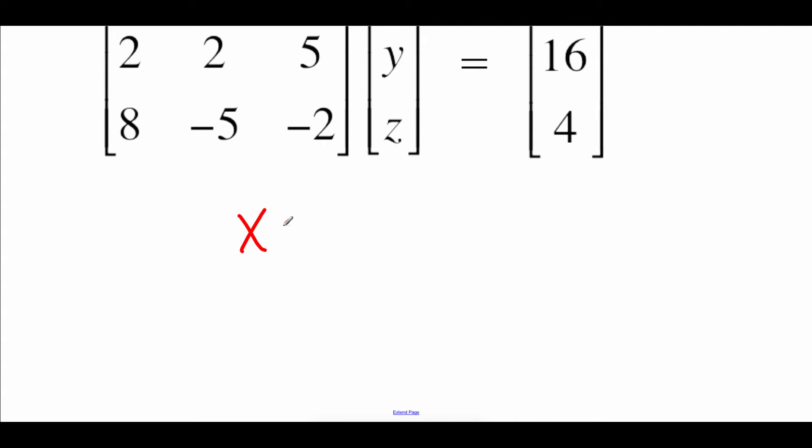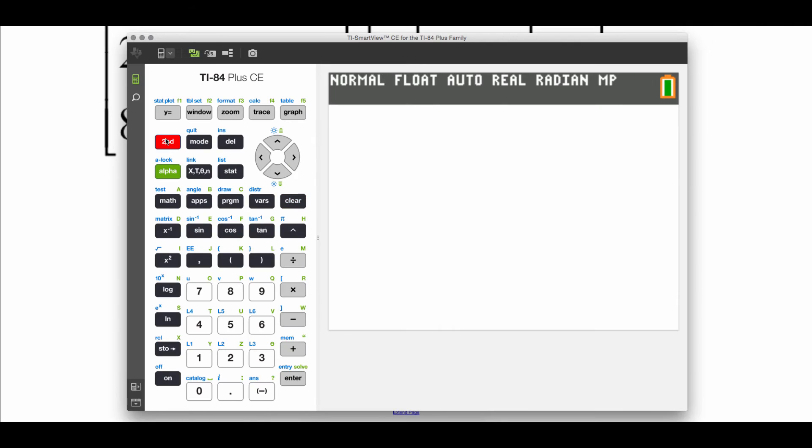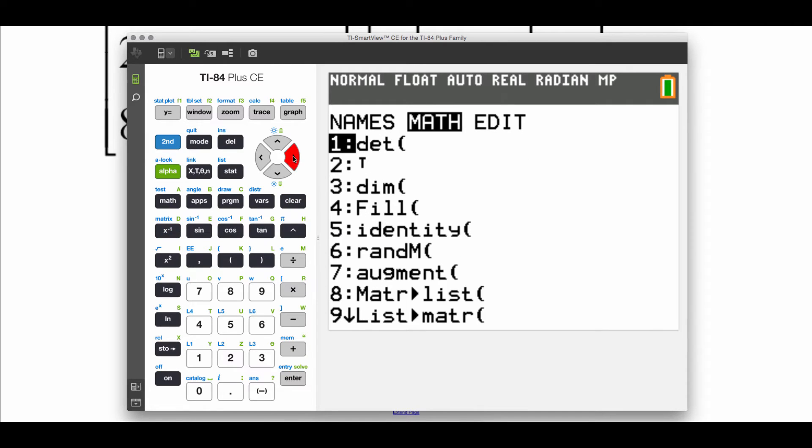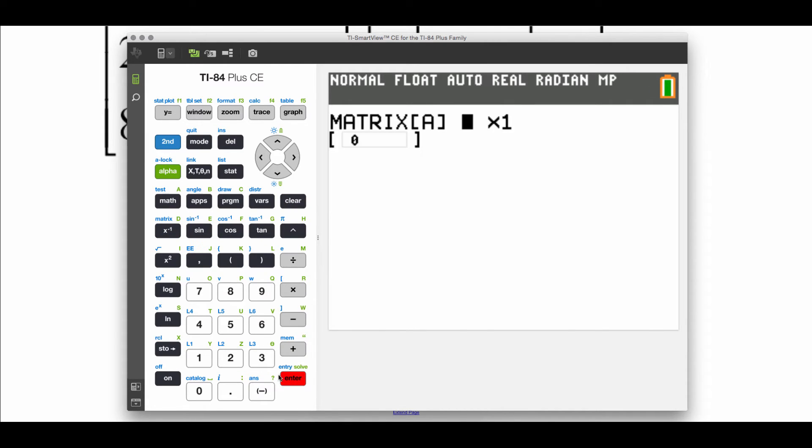So what we can do in order to solve this equation is we can take X equals the inverse of our matrix A times matrix B, and I'm going to use my calculator to help me out on this one. First thing we need to do is enter in those matrices, so I'm going to arrow over to edit matrix A. That one was a three by three matrix.